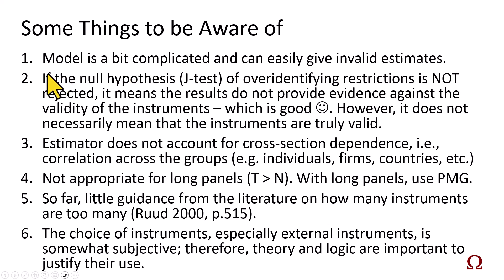Number two, if the null hypothesis for J tests of over-identifying restrictions is not rejected, which is what we would like to see, it means the results do not provide evidence against the validity of the instruments. However, it doesn't necessarily mean that the instruments are truly valid, as the literature tells us.